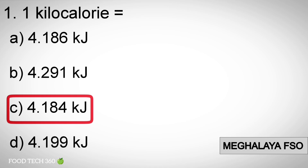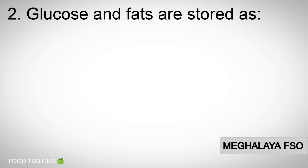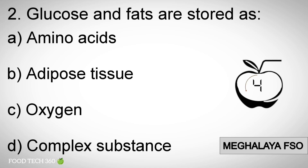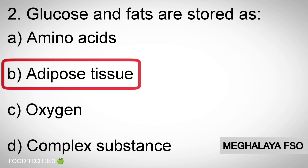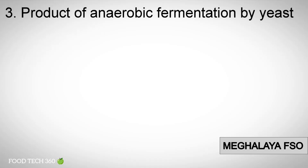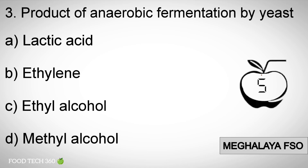Question number 2: Glucose and fats are stored as — options: A) amino acids, B) adipose tissue, C) oxygen, D) complex substance. Correct answer: B) adipose tissue. Question number 3: Product of anaerobic fermentation by yeast — options: A) lactic acid, B) ethylene, C) ethyl alcohol, D) methyl alcohol.